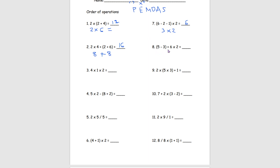Number 8, we have (5 minus 3) plus 6 times 2. Inside the parentheses we have 5 minus 3, so we do that first. 5 minus 3 equals 2, leaving us with 2 plus 6 times 2. We do 6 times 2 first according to PEMDAS, which gives us 12, and now we have 2 plus 12 which gets us 14.